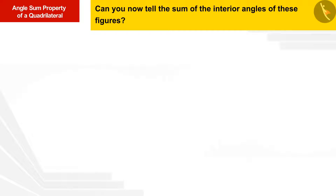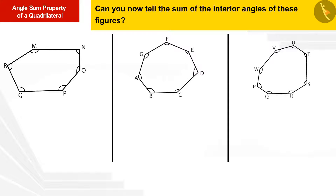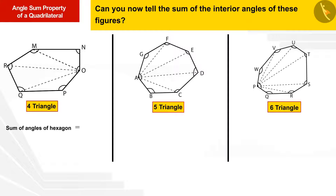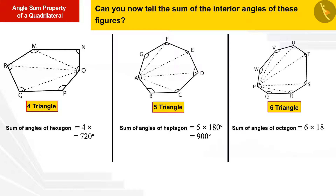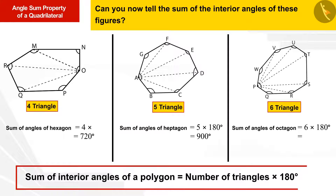In the same way, we can divide a hexagon, heptagon and octagon into triangles. The hexagon gives 4 triangles, the heptagon 5, and the octagon 6. The sum of all interior angles of a polygon equals the number of triangles formed by drawing diagonals from one vertex, multiplied by 180 degrees.